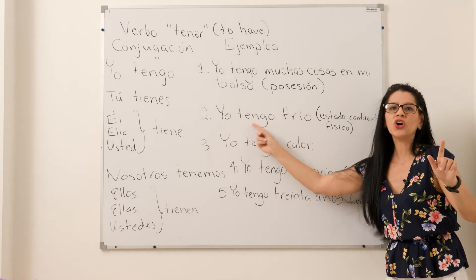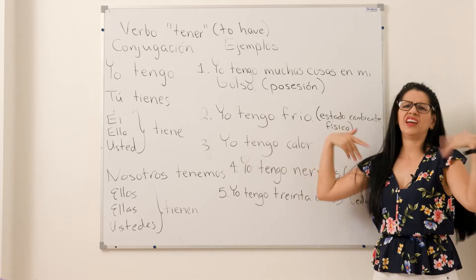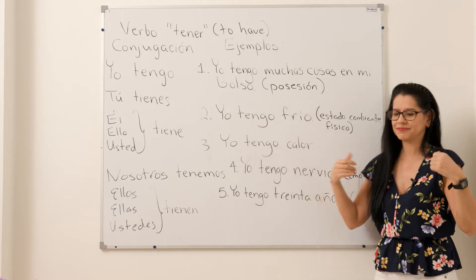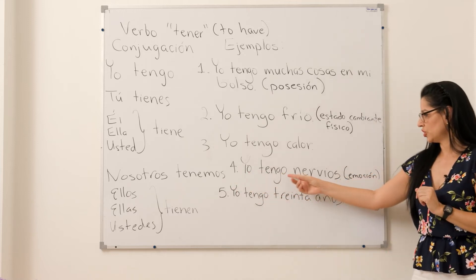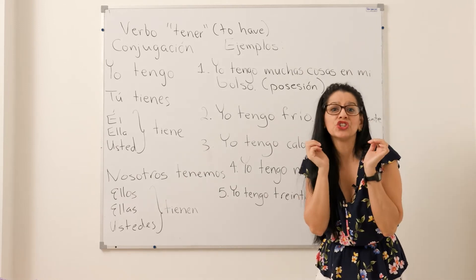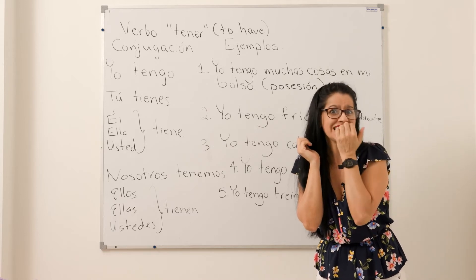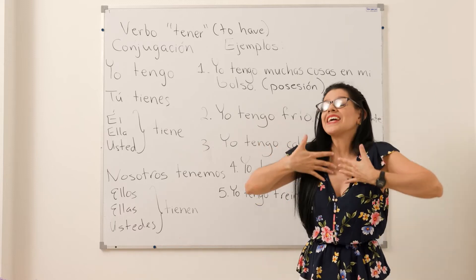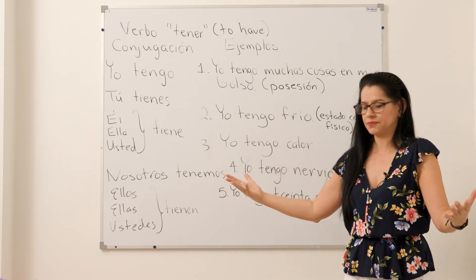Repita: Yo tengo frío. Yo tengo calor. Muy bien. Número cuatro: Yo tengo nervios. Cuando yo tengo nervios, yo como mis uñas. Yo tengo nervios — para expresar emoción. Usted expresa emoción. Muy bien.